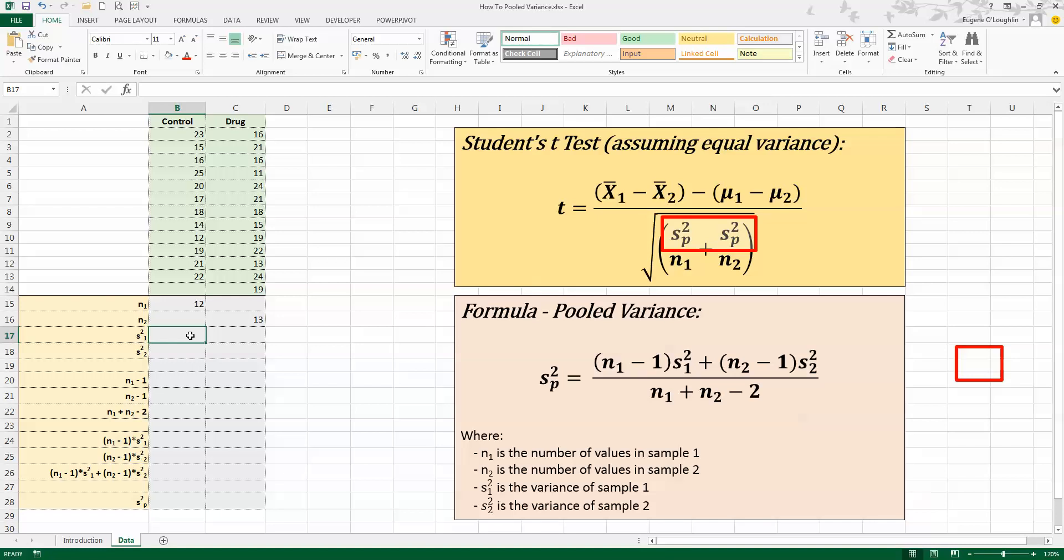We also need the variance of sample one and the variance of sample two. So again that's fairly straightforward, type in equals VAR and up pops a selection of variance formulas that you can use. These are samples that we are using here so VAR.S is the one that we need so double click on that and again just select all the values in the control column B, press closing bracket and enter and I'm also going to calculate the variance in the same way, VAR.S, opening bracket for the drug treated group and press enter. Now we can see that the variance of sample one is 15.18 and the variance of sample two is 16.42 so there's a slight difference in the variances there and we know that our pooled variance is going to be somewhere around these two values. So we'd expect it to be between 15.18 and 16.42.